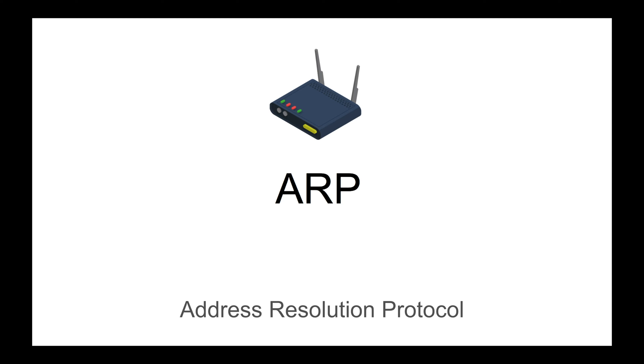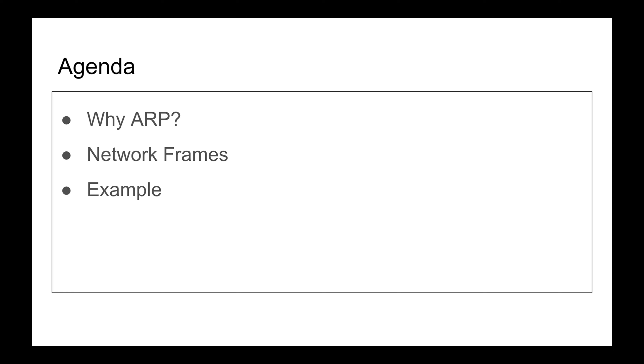Despite there being a lot of videos about ARP out there, I'm going to address ARP from a software engineering perspective. Here's the agenda: first, I'll define what ARP is, then talk about why we need this protocol, then cover a bit of the network frame and where ARP fits, and finally show an example using an HTTP GET request funneling down to an ARP request.